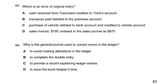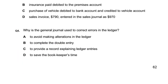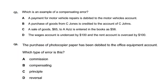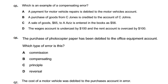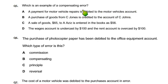Question number 5: which is an example of compensating error — when two errors cancel out each other? Option A: payment of motor repair were debited to expense repair. This is a principle error.